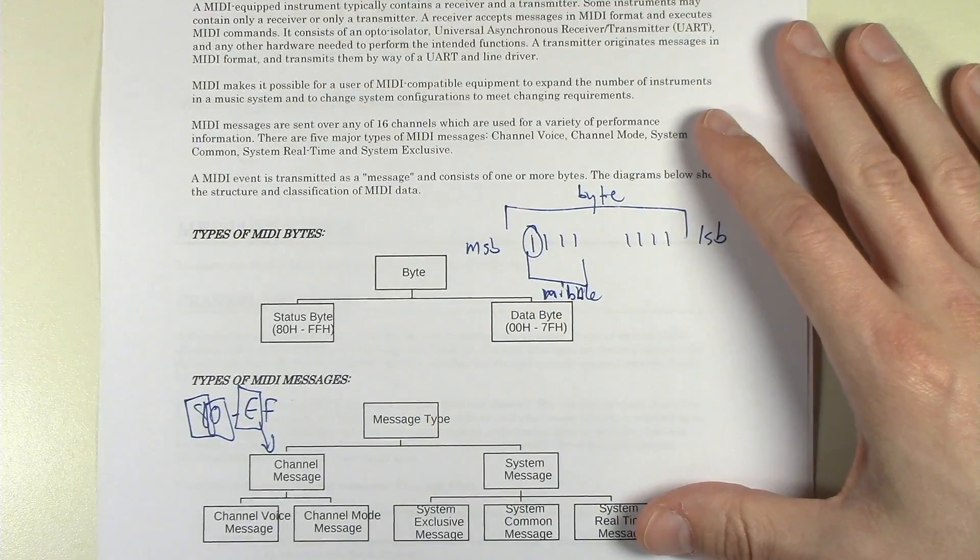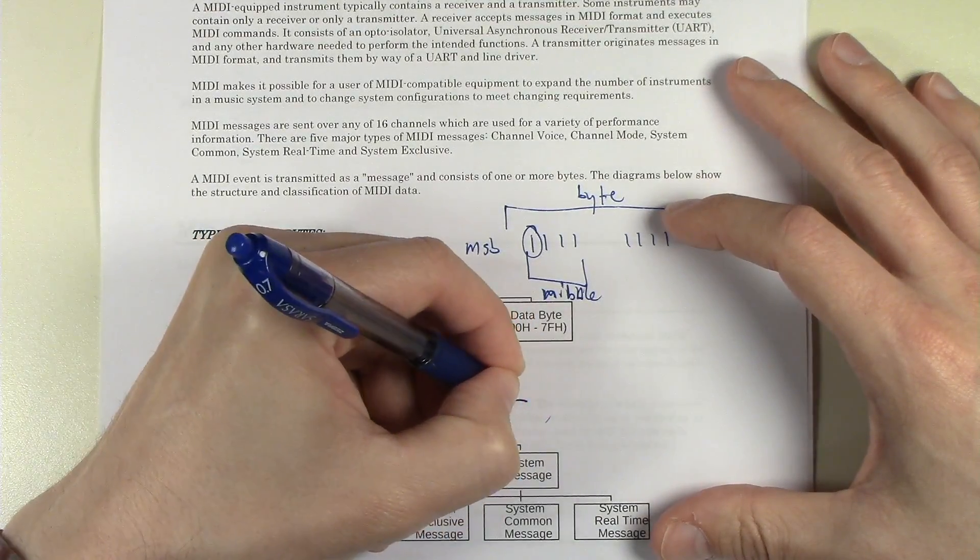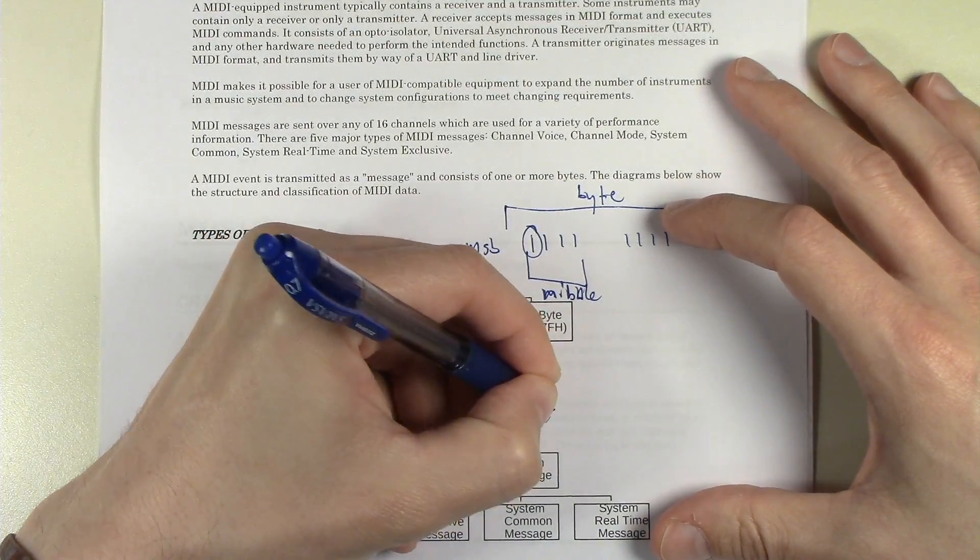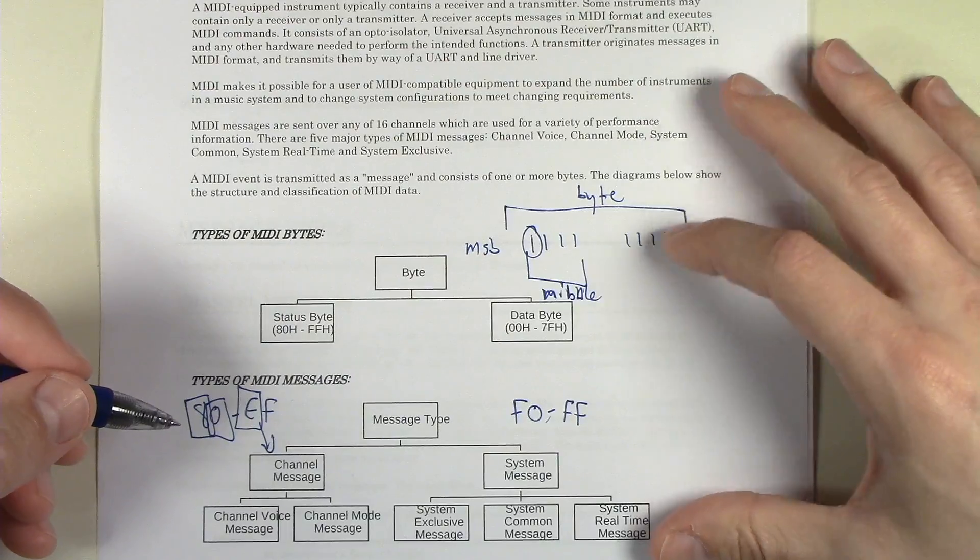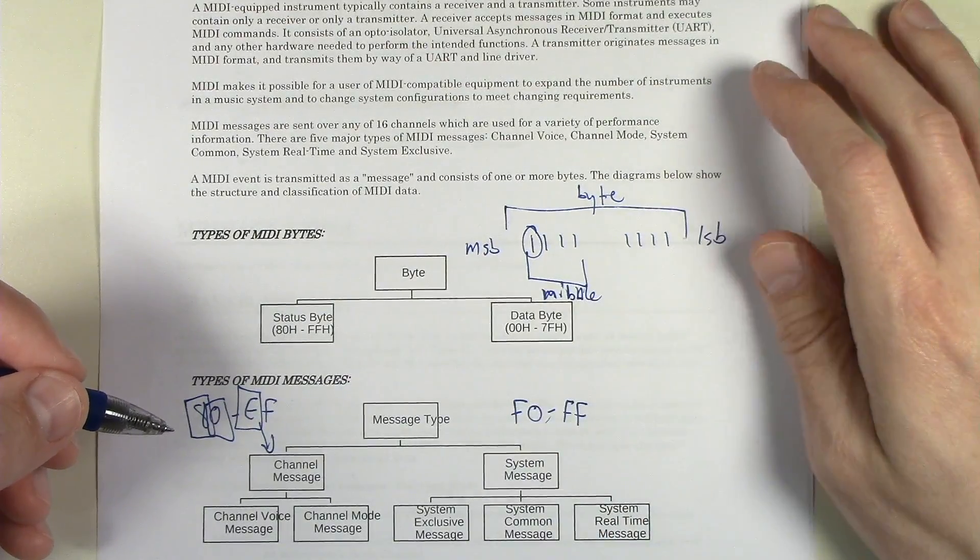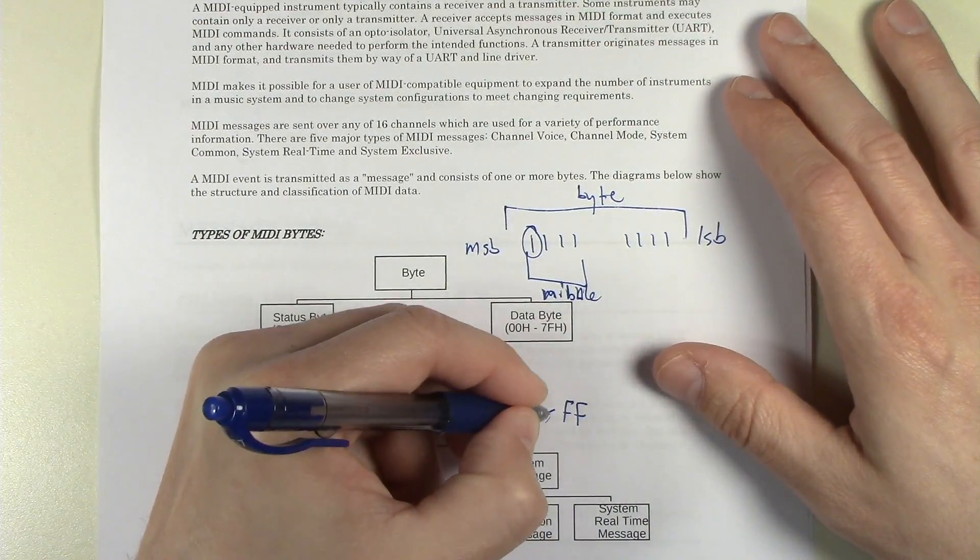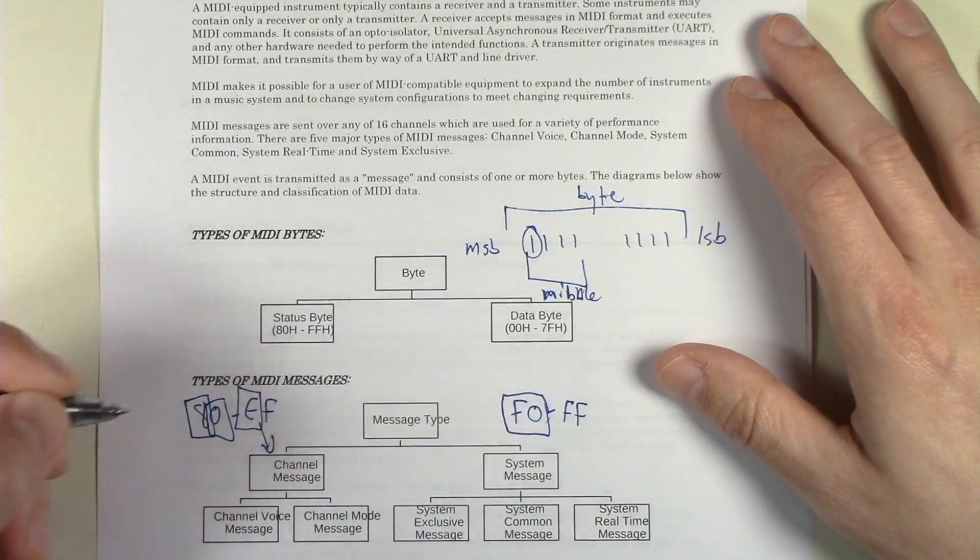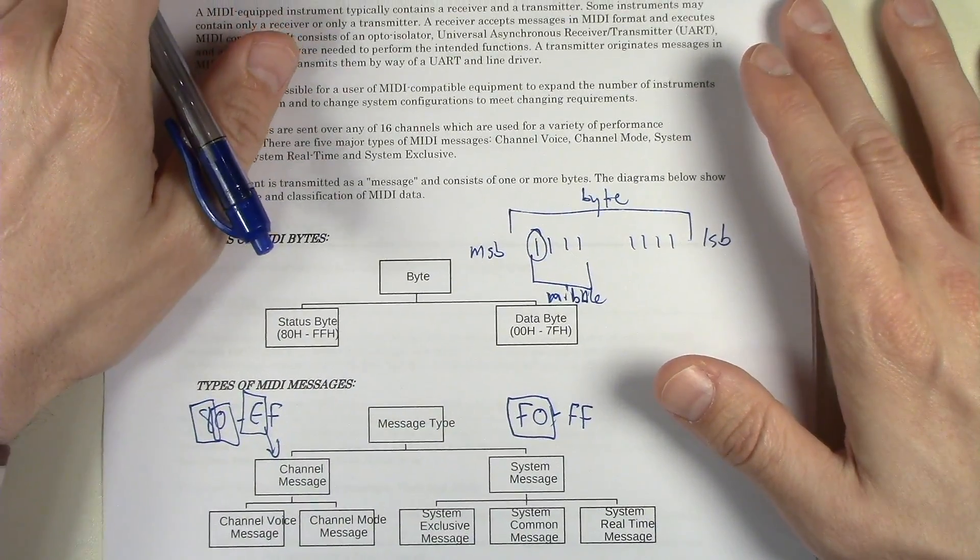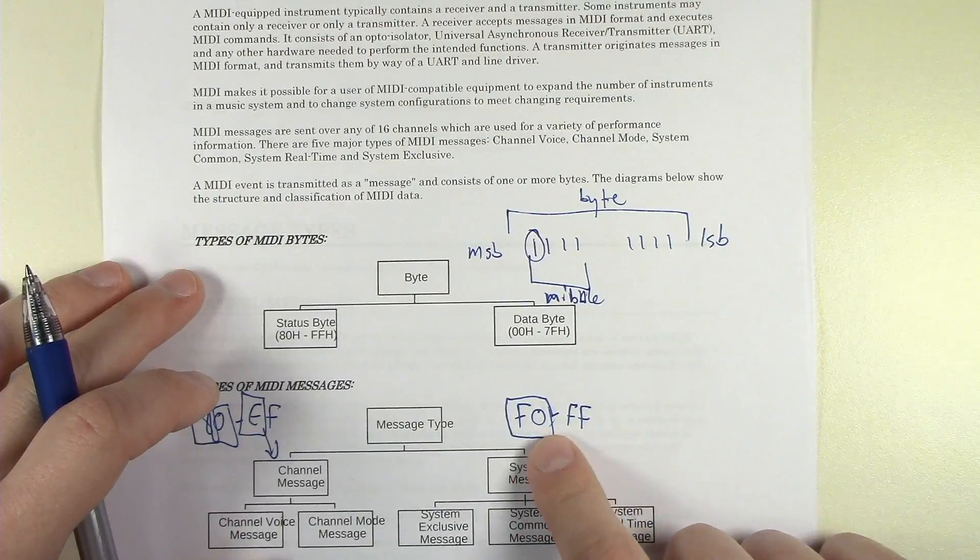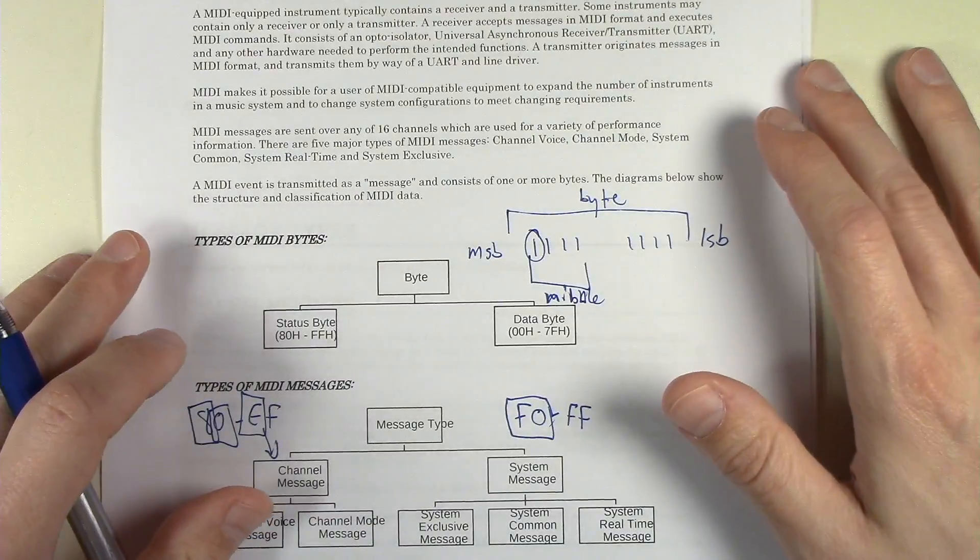But in system messages, because system messages are global and they don't have a channel, all the values from 0xF0 to 0xFF are used. And in fact, those are not all actually assigned. There's some that are not used. But generally, all those values, and in this case, the entire byte is the command or is the status byte. And each of those is unique. There is no channel number. And all of those are able to be used to encode the various kinds of system messages.